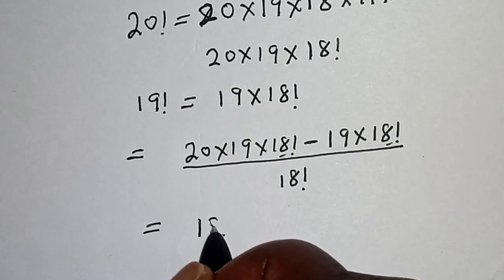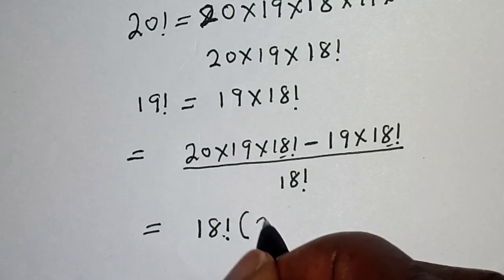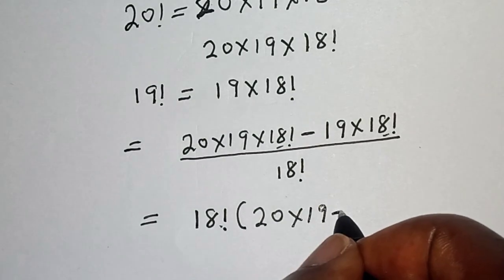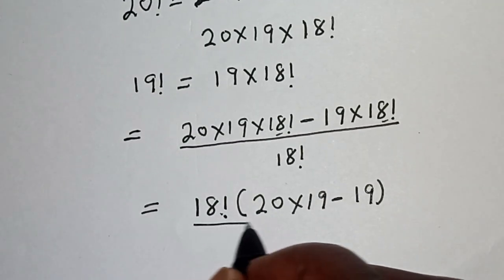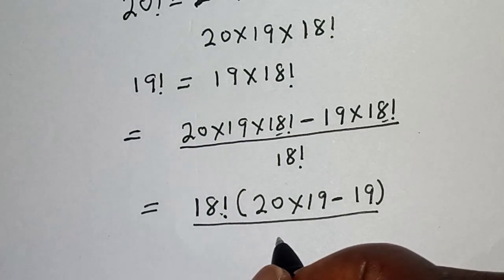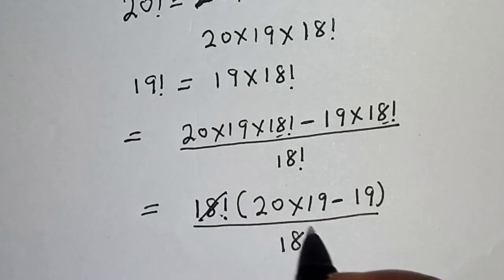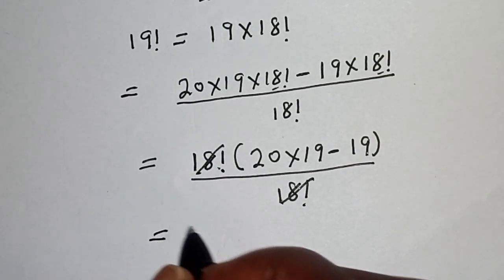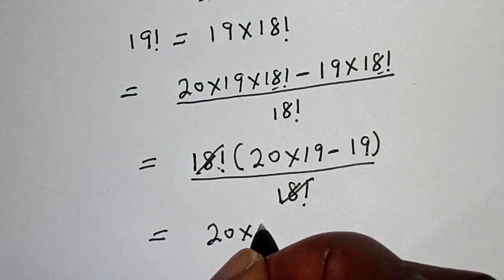This is equal to 18 factorial bracket, 20 times 19 minus 19, over 18 factorial. This is equal to 20 multiplied by 19 minus 19.